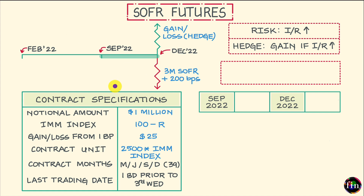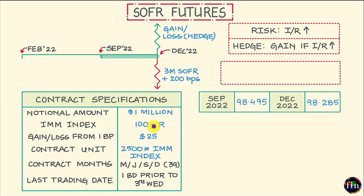Coming back to our simple example, I have to at this point in time enter into an appropriate hedge using the three-month SOFR futures contract with contract month September 2022. If I were to go to the market, as of today this futures contract is trading at 98.495. I interpret this quote as 100 minus the three-month implied SOFR for the reference quarter, meaning the market is telling me the three-month SOFR for this period is 100 minus 98.495, which comes to 1.505%.